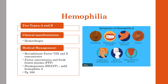Christmas disease is named after the first hemophilia B patient, five-year-old Stephen Christmas. Hemophilia is often diagnosed early in childhood, but patients with mild hemophilia might not be diagnosed until a severe trauma or surgery later in life — which is why we discuss it in adult health as well.